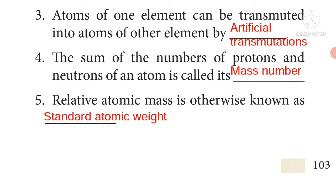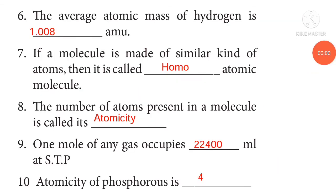Relative atomic mass is otherwise known as standard atomic weight. The average atomic mass of hydrogen is 1.008 AMU. If a molecule is made of similar kind of atoms, then it is called homoatomic molecule. The number of atoms present in a molecule is called its atomicity. One mole of any gas occupies 22,400 mL at STP. Atomicity of phosphorus is 4.